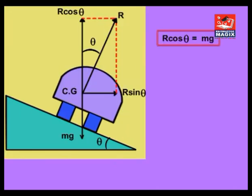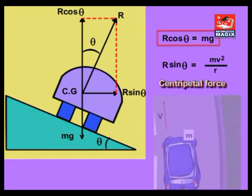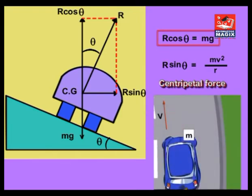Thus, R cos θ = mg. The horizontal component R sin θ is directed towards the center of the curve and it acts as the centripetal force mv² / r, where v is the speed of the vehicle.